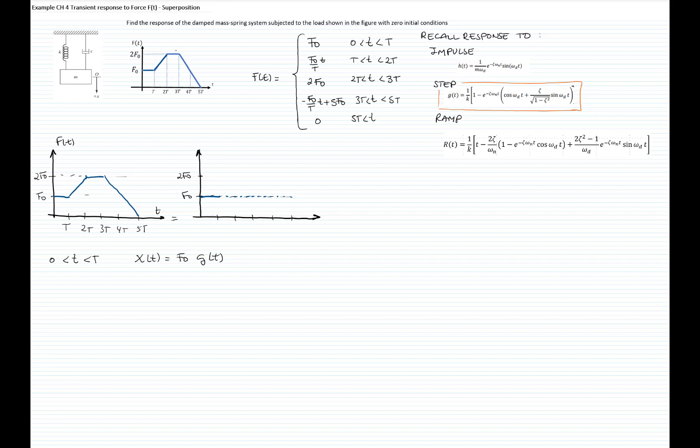Now for time greater than capital T and less than 2 capital T, we have to add the ramp that is shown. So what we are going to do is add a ramp to my function, and therefore I will add the ramp to the response. So for this period of time, the response will be equal to the same step function plus a ramp.